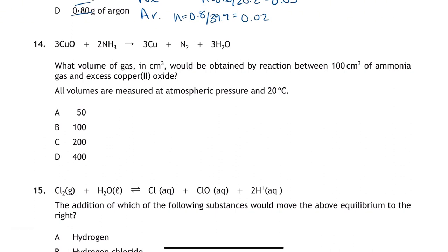Question 14 is looking for the volume of gas that would be obtained. It's everything that's produced as a gas at 20 degrees. The only thing that will be a gas at 20 degrees is nitrogen, because water isn't a gas until it gets to 100. When it comes to gas volumes, it's just using the mole ratio. If it's a 2 to 1 ratio between ammonia and nitrogen, if we've got 100 centimeters cubed of ammonia, we're going to make half the amount of nitrogen. So it would be 50 centimeters cubed.